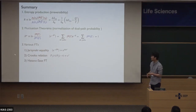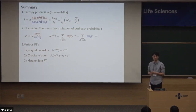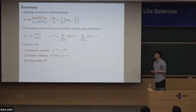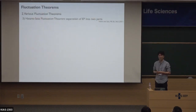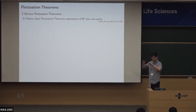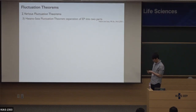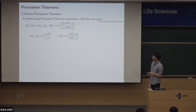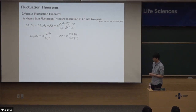Now I will continue to the third one, which is called the Hatano-Sasa fluctuation theorem. So what is the Hatano-Sasa fluctuation theorem? It is about the separation of the total entropy into two parts. This is the total entropy production, given as the forward and time-reverse path probability.